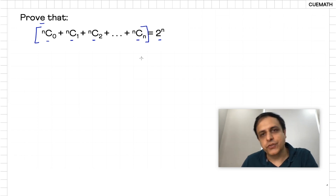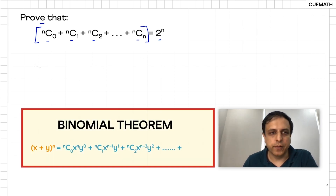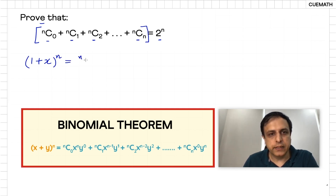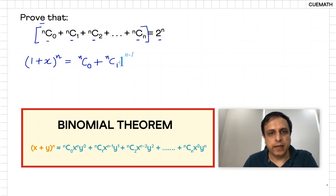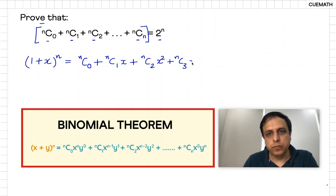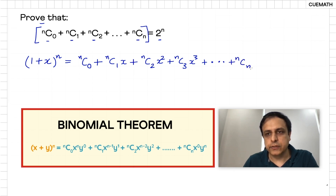One straightforward way to do this is to simply use the binomial theorem. If we take the expression (1 + X) to the power N and expand it using the binomial theorem, we get NC0 times 1 to the power N times X to the power 0, which we can write as NC0, then NC1 times X, and then NC2 X squared, NC3 X cubed, and so on all the way up to NCN X to the power N.